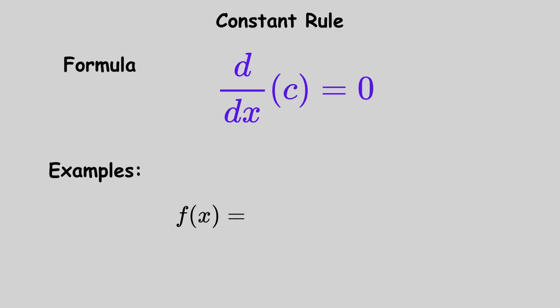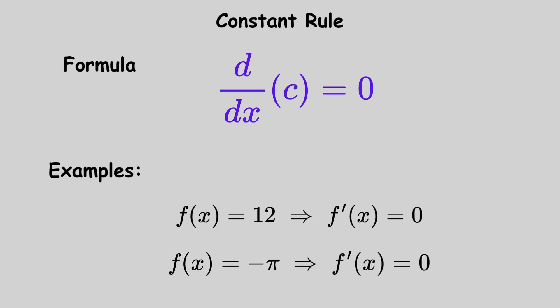For example, if f of x equals 12, then f prime of x equals zero. Similarly, if f of x equals negative pi, then f prime of x equals zero.